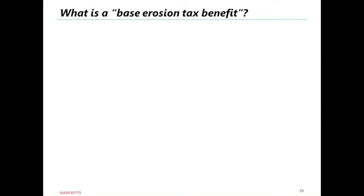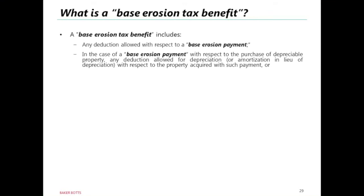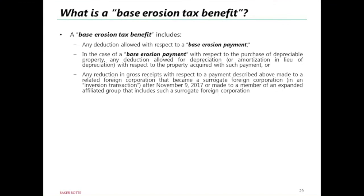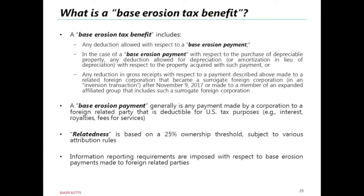A base erosion tax benefit is fairly broadly defined and generally includes any deductible payment made to a foreign related party — including interest, royalties, and service fees — as well as depreciation and amortization deductions for property purchased from a foreign related party. For corporations pursuing an outbound inversion transaction after the November 9th introduction date, the definition also includes any other payments that reduce gross receipts. A foreign related party is generally any affiliate with 25% or greater common ownership, with typical stock attribution rules applying. Information reporting rules have been expanded to require reporting of base erosion payments to foreign affiliates.